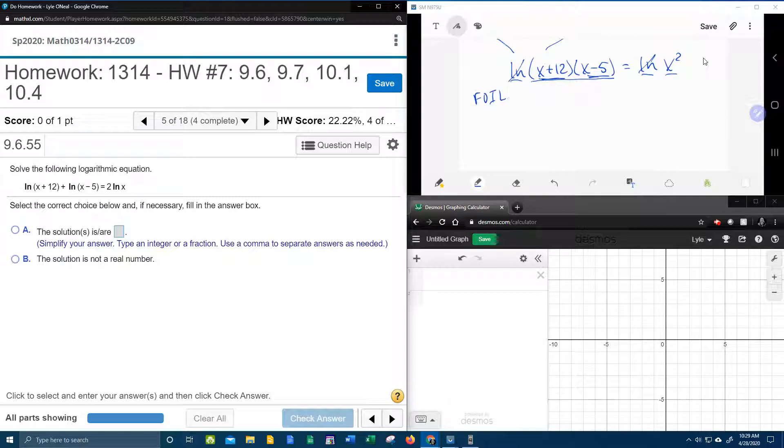Using the FOIL method, x times x gives me x squared. On the outside, negative 5x. On the inside, we get a plus 12x. Last but not least, 5 times 12 is 60. Positive times a negative makes it a negative. Equals x squared.